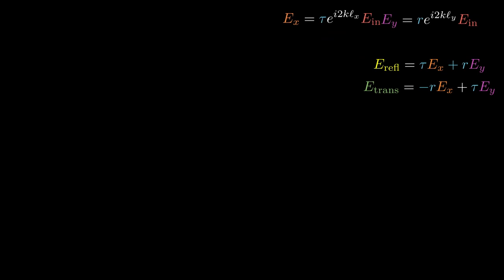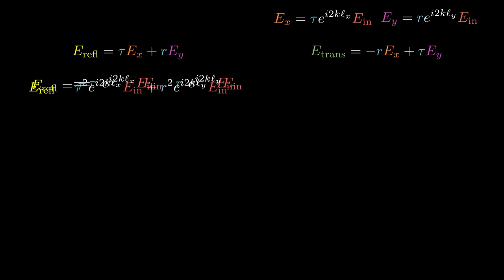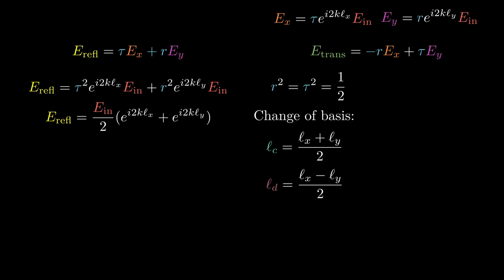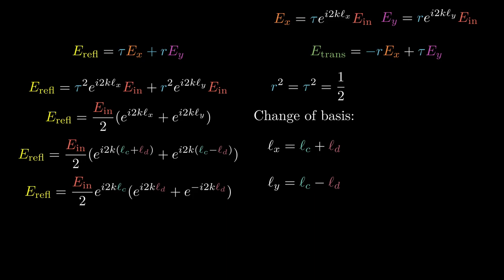Now that we have these equations, let's do some algebra, starting with the reflection. First, we use our equations for the X and Y arm. Next, we'll assume our beam splitter is actually 50-50. Now we'll do a change of basis from the X arm, Y arm basis to the common LC and differential LD basis. Subbing those in. Taking out a common factor of LC and using a trig identity. Rearranging gives us what we call the Michelson reflectivity.